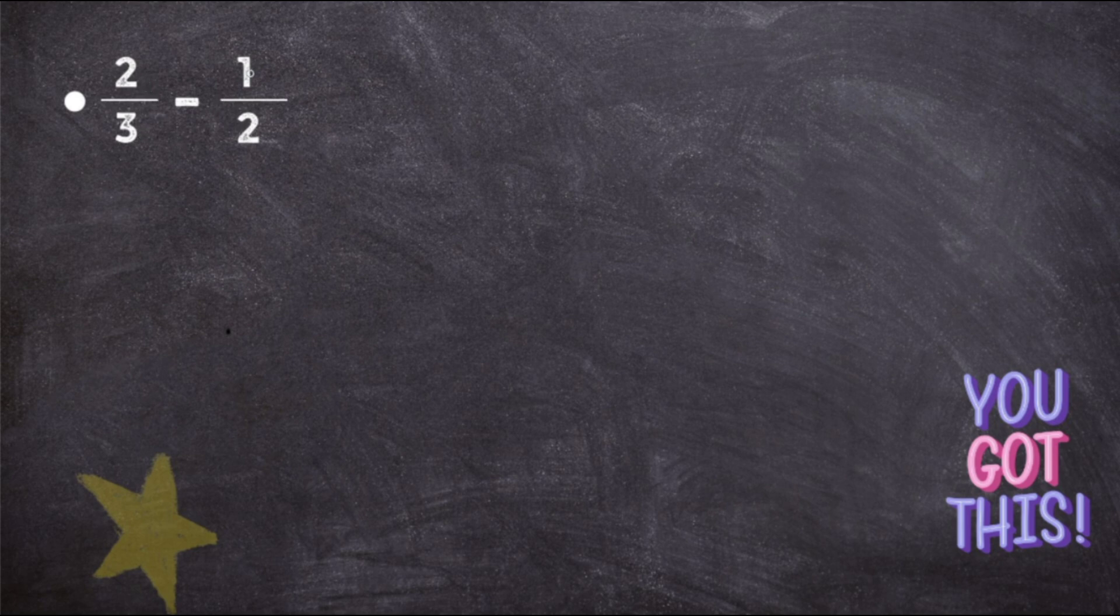Now let's take another question, which is 2 upon 3 minus 1 upon 2. So here, as I said, first check the denominator. Are they the same? No, it is different. So go to the next step, which is to check whether they are related. That is, if you multiply or divide 3 or 2 by any number, will you get the number which is present in the denominator of the other fraction? Is it possible? No, you cannot multiply 3 or 2 by anything which will give you answer as 3 or 2, right?